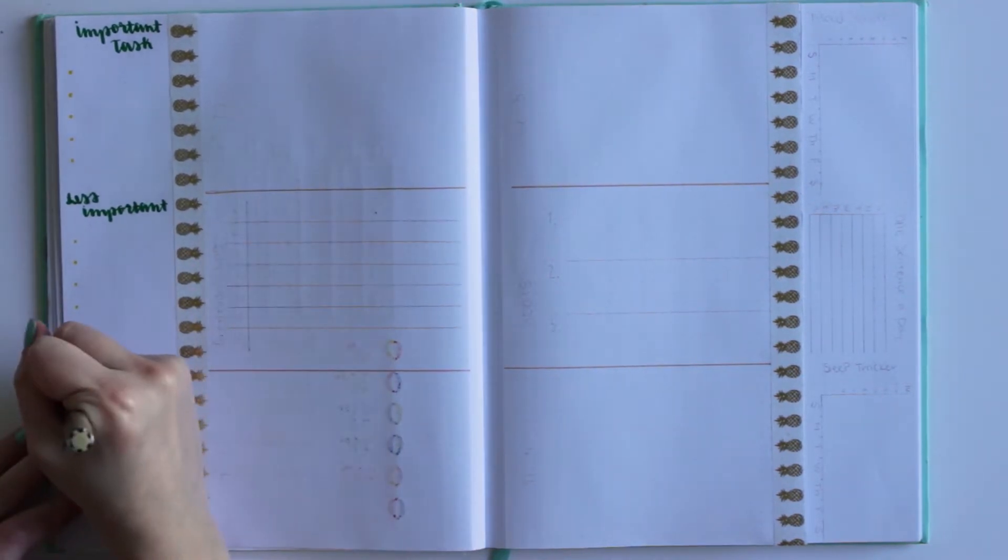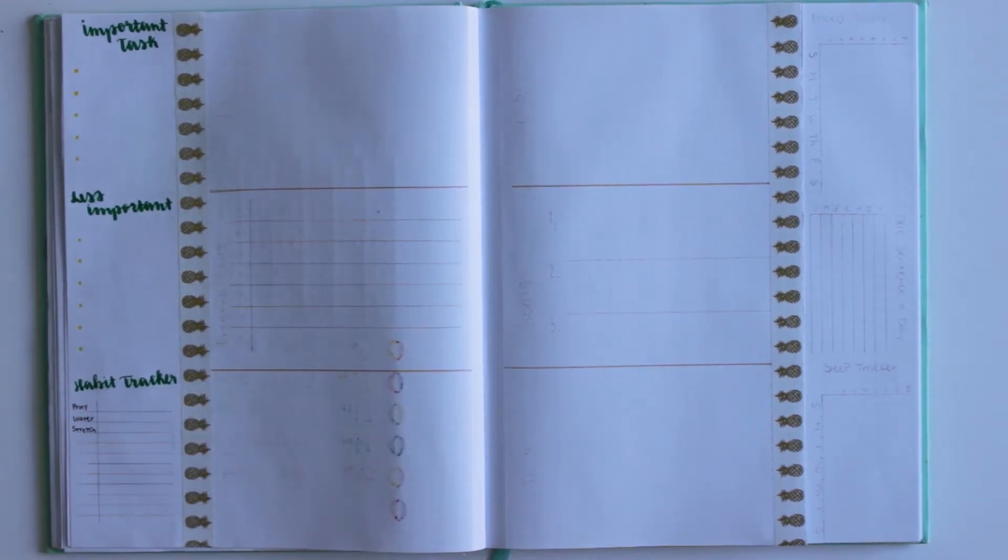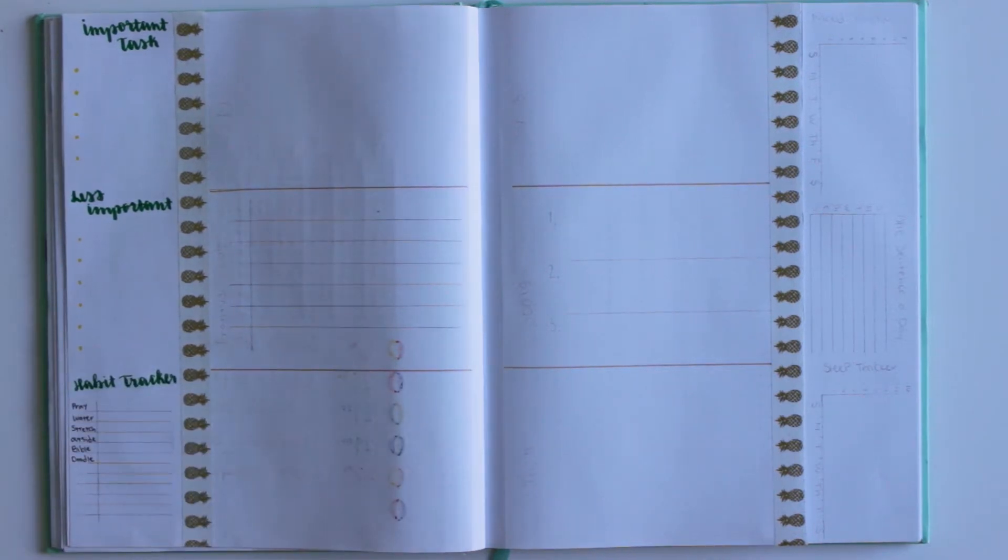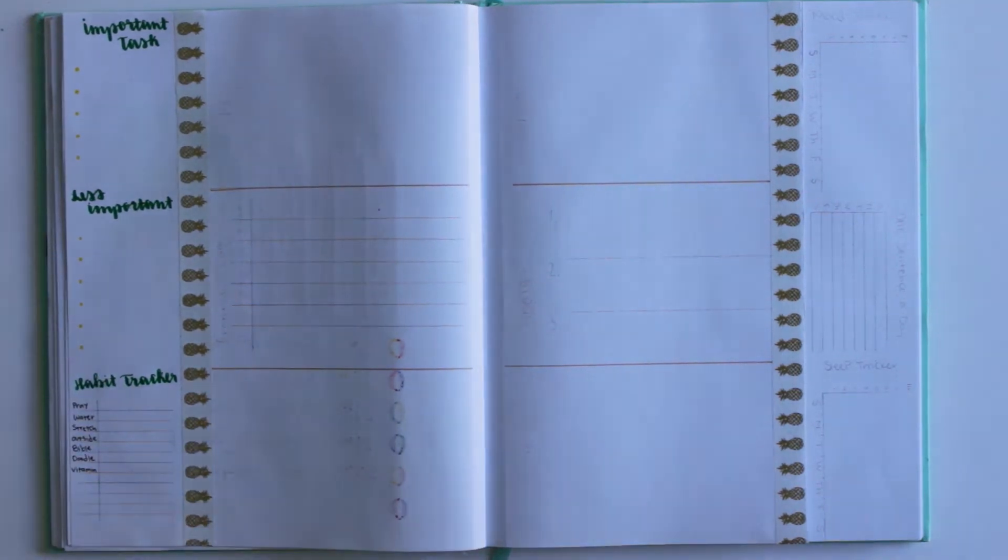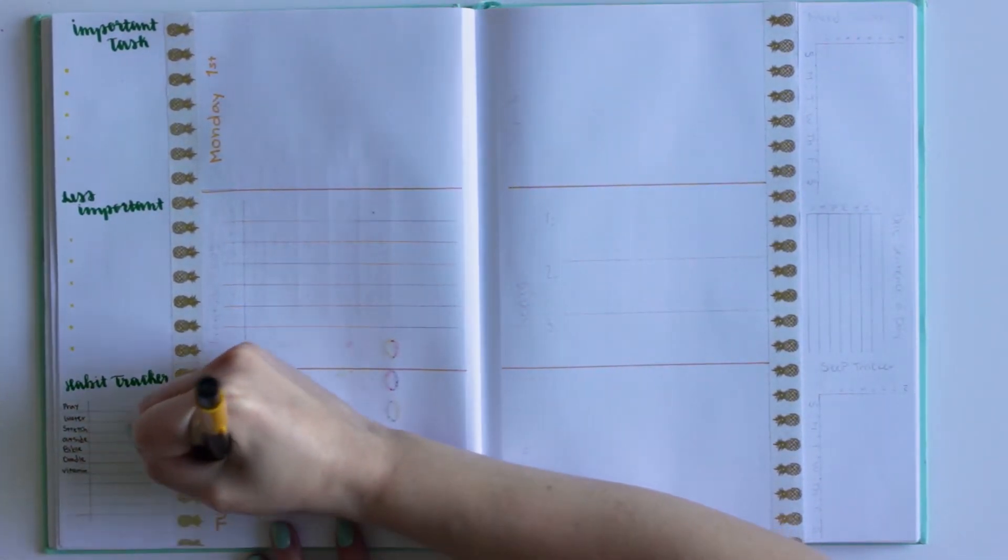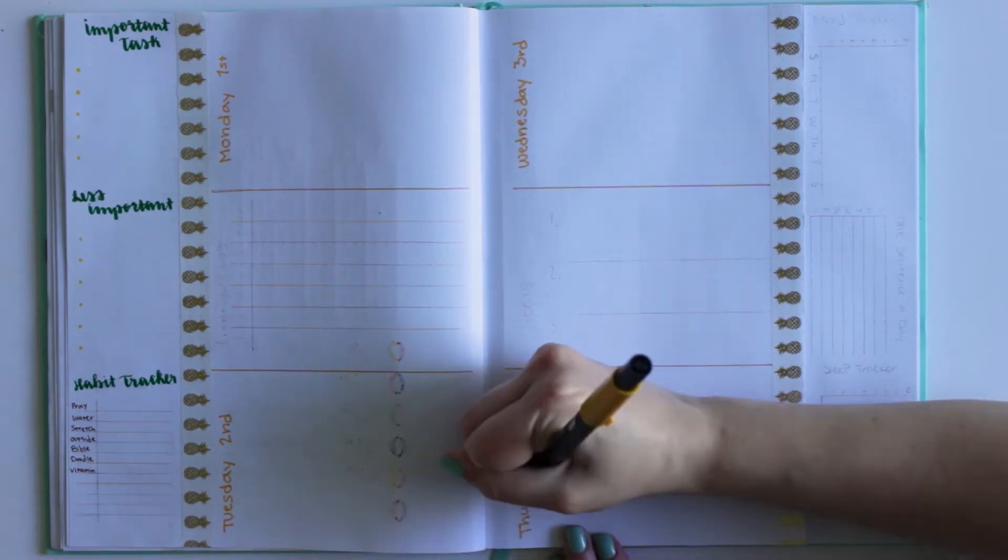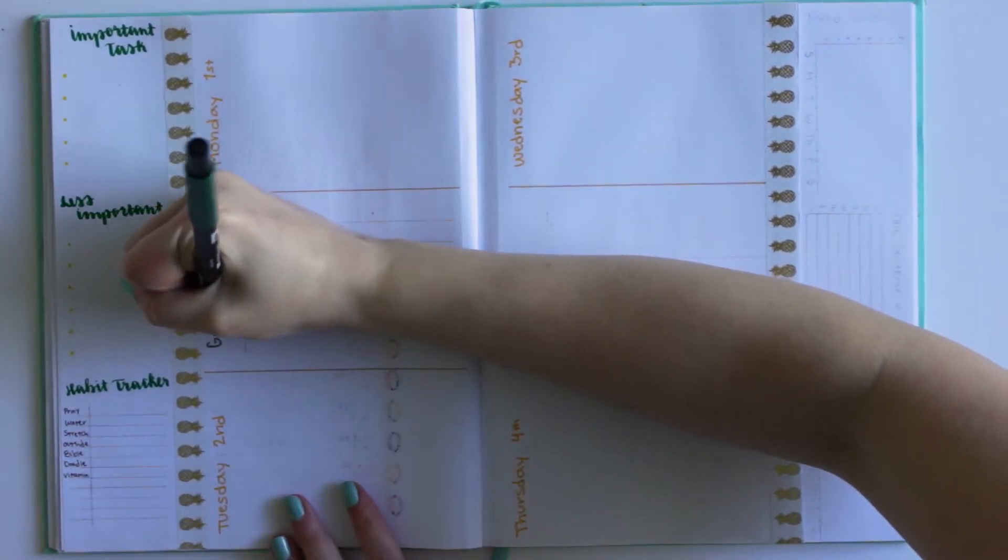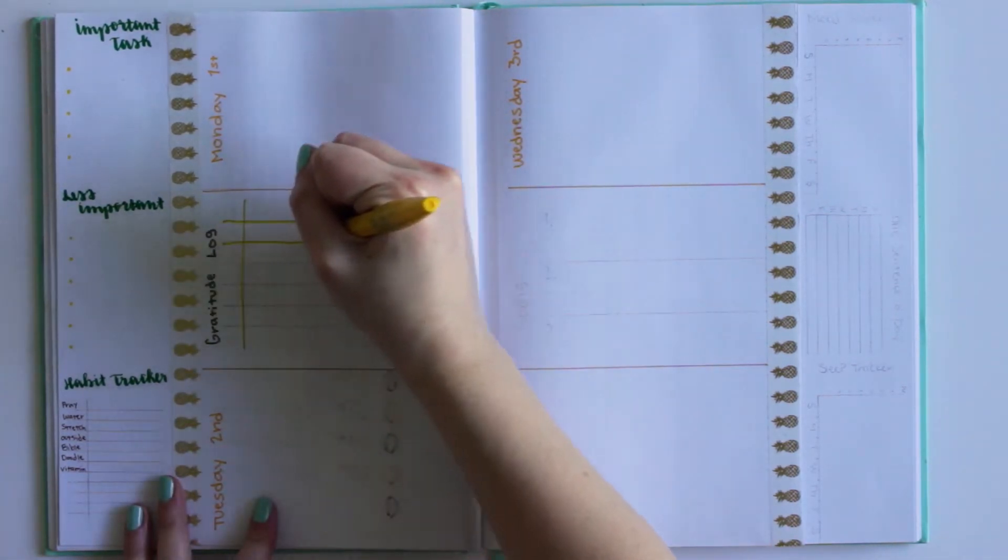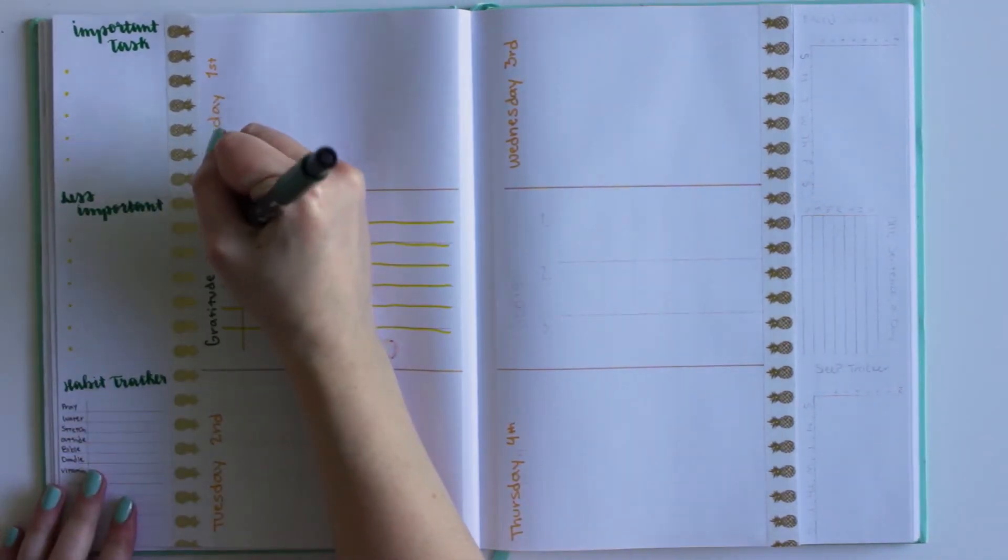I feel like this way I'll be putting in my weekly tasks and things like that, and I'll also be looking at everything else. On the left, I have some important tasks. I just like to write out a couple of important tasks so I don't forget to put them in my week. And then the less important ones are things that need to get done but are obviously less important than the more important tasks. I have my habit tracker down below. I put pray, water, Bible, vitamins. I also put doodle and outside, to go outside.